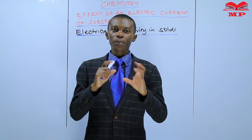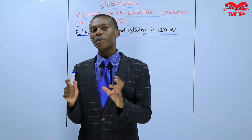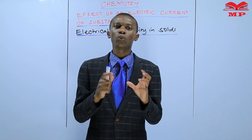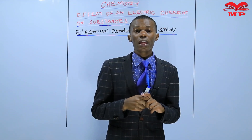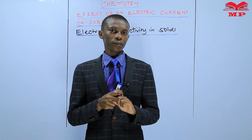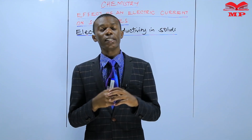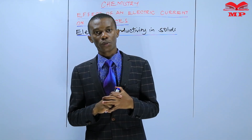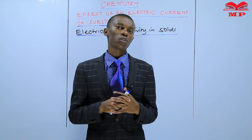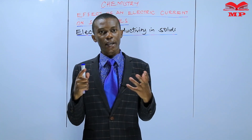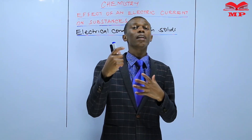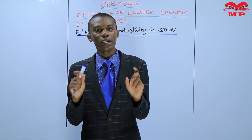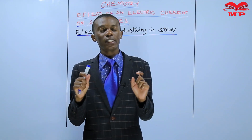Another substance which also conducts electricity, though it's a non-metal, is graphite. We are going to learn in this lesson why it is able to conduct electric current. The third term was a non-conductor — a non-conductor is a substance that does not allow electric current to flow through it. Examples include rubber, plastics, and wood. The assignment left was to distinguish between a conductor and a non-conductor while giving examples in each case.